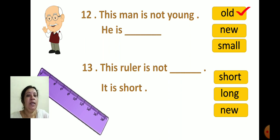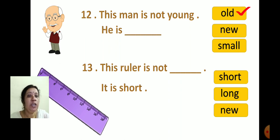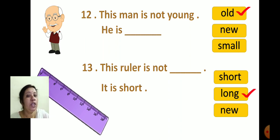Now see the next one: 'This ruler is not dash. It is short.' The options are Short, Long, and New. Here also, we are writing the opposite of short. What is the opposite of short? Yes — long. So the answer is: 'This ruler is not long. It is short.' Opposite of short is long. Understood?